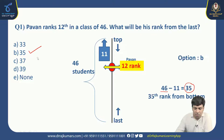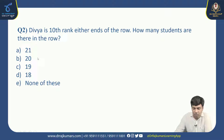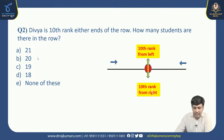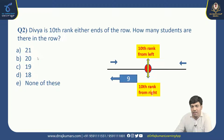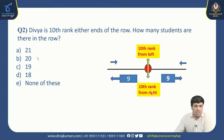Moving on to the next problem: Divya is 10th rank from either end of the row. How many students are there in the row? Options are 21, 20, 19, 18, and none of these. They are telling there is a row where Divya is standing in the 10th position when counted from both sides — 10th from the left and also 10th from the right.